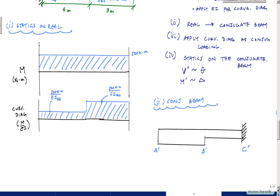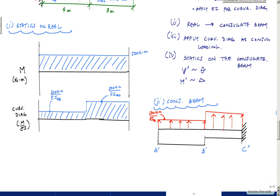Now for loading: if I have a positive curvature, that load acts upwards on the conjugate beam. A common mistake is getting this sign wrong. Since the curvature is positive throughout, the conjugate loading acts upward. The load intensity for segment AB is 500 newton meters over EI_AB, and for segment BC it is 500 newton meters over EI_BC.